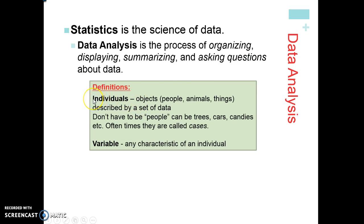There are two definitions you need to be aware of when discussing data: individuals and variables. Individuals are the objects or the set of data that we're actually studying — they don't necessarily have to be people. They can be trees, cars, candies, houses, whatever specific instance we're studying. The variable is the characteristic of the individual — for example, the height or color of the trees, the color of the cars, or the types of candies.